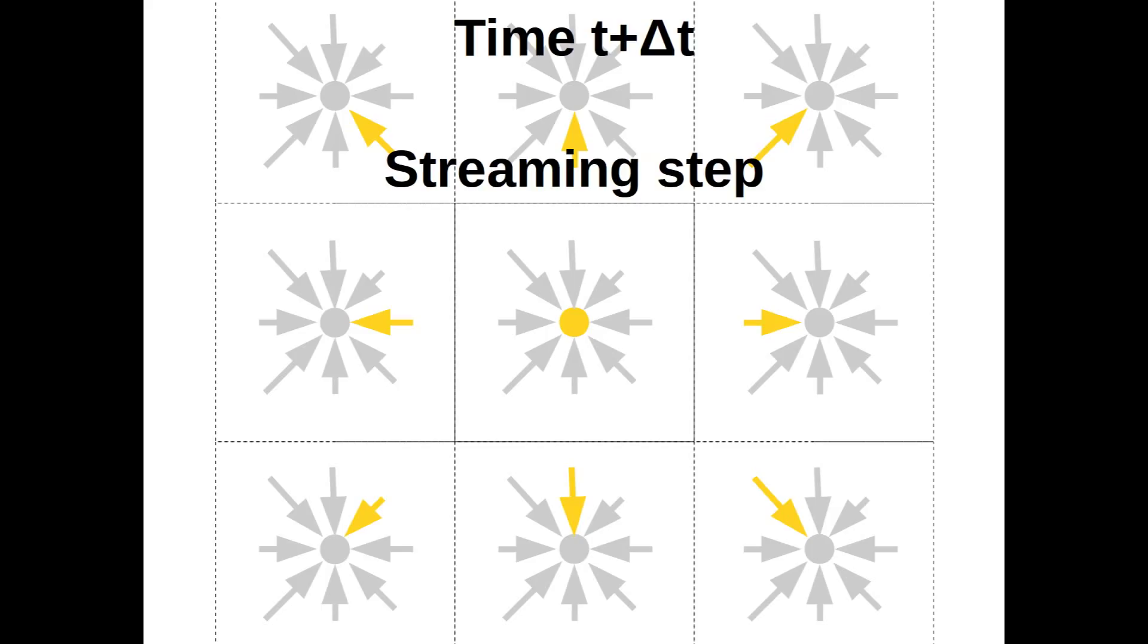These gray-colored distributions and the yellow distributions for the rest population now correspond to the particle distributions at time t plus delta t.